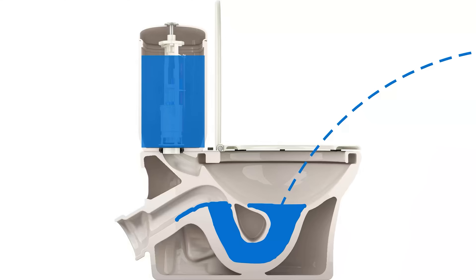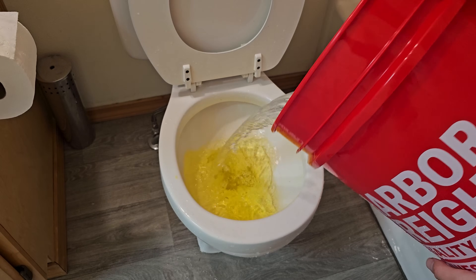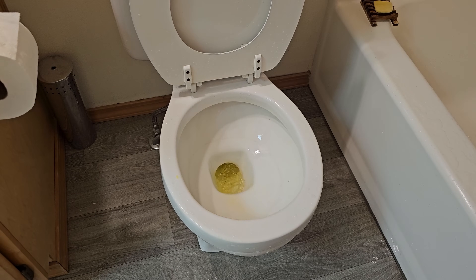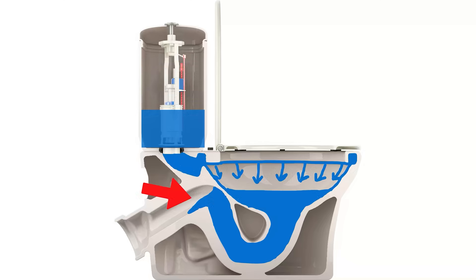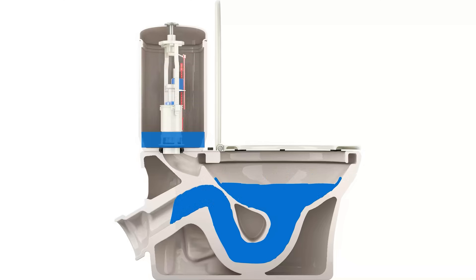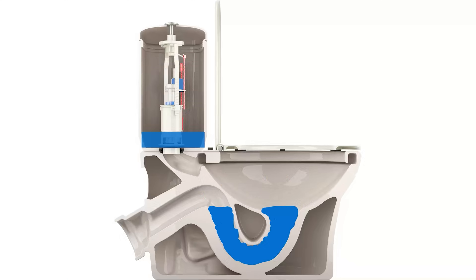To remind you why this should work at all: to flush a toilet, all you need to do is dump enough water into the bowl quickly enough to raise the water level above the trap. Then as that water exits, it creates a siphon that pulls the rest of the water and any undesirable logs with it.